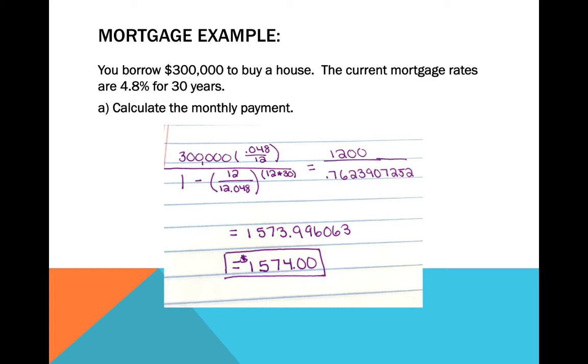My calculator gave me 1,573.996063. Rounding that to two decimal places would actually round it to $1,574. Do not round to the nearest dollar. Round to the nearest two decimal places. This problem happened to make that to the nearest dollar, but that's not always the case.